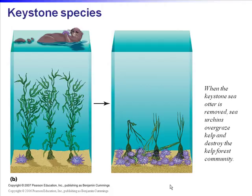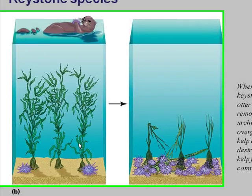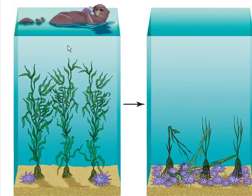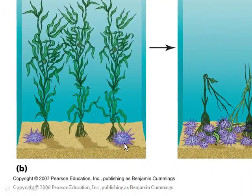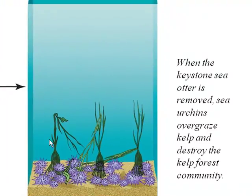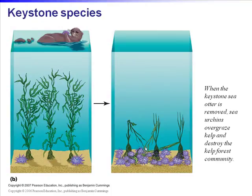The classic example in the book is sea otters in the kelp forest. There are three organisms involved: the sea otter, the kelp, and the sea urchins. Sea otters feed on the urchins and keep their population in check. The sea urchins are primary consumers of the kelp. When sea otters are removed from a kelp forest, the urchins will completely overgraze the kelp bed and destroy it, and many organisms depend on that kelp community.